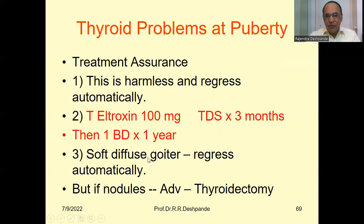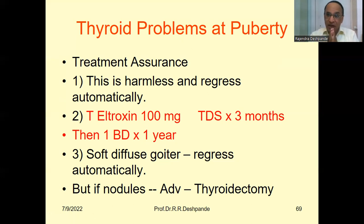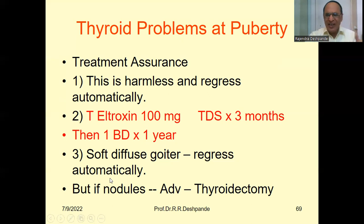Soft, diffuse goiters come down and regress automatically. But sometimes there may be nodules, and in that case there may be a necessity of surgery — thyroidectomy. 'Tomy' means to cut — thyroidectomy. But this is a very rare occasion. That is what we have covered regarding thyroid problems at puberty.